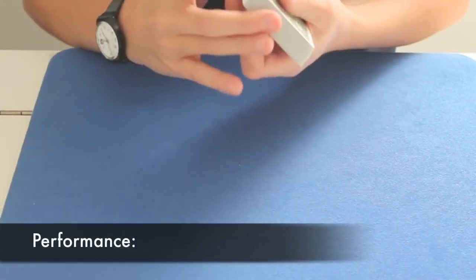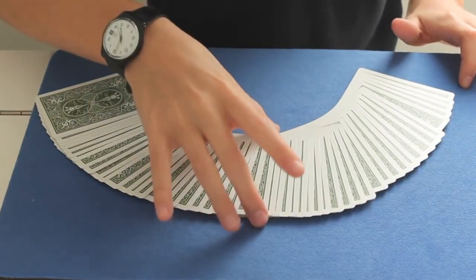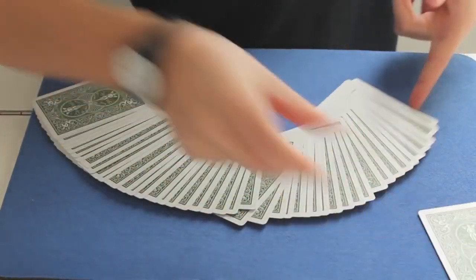First, the spectators shuffle the cards as much as they want. Then they pick one, let's say this one for example, take a look at it, that's great.